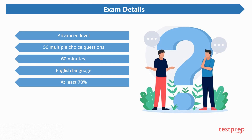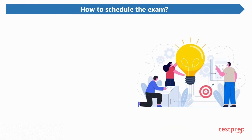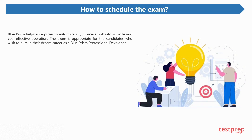Candidates need to score at least 70% in order to qualify for the Blue Prism Professional Developer exam. The Blue Prism Professional certification cost is 150 US dollars at Pearson VUE.